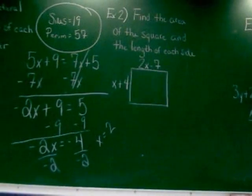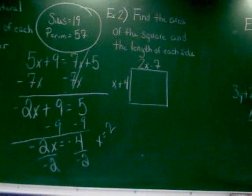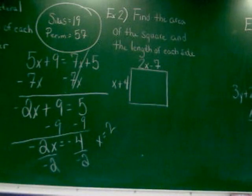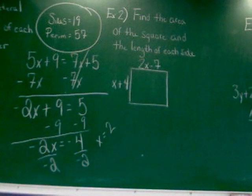Find the area of the square and the length of each side. Remember, area is just length times width. That's all area is. You can see the top side there says 2x minus 7, and the other side says x plus 4.